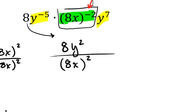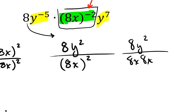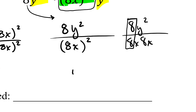In my numerator I've got 8y squared; in my denominator I've got 8x times 8x. Notice the difference: in the numerator, it's just y getting squared — so I've got an 8 and then y times y. In the denominator, what's getting squared is the 8x — so I've got 8x times another 8x. I can see an 8 over 8, which is a giant 1. So I can eliminate that. I'm left with y squared in the numerator and 8x squared in the denominator. The final answer for part B is y squared over 8x squared.